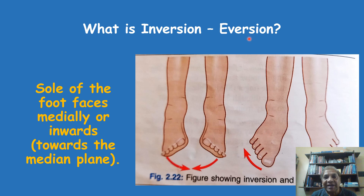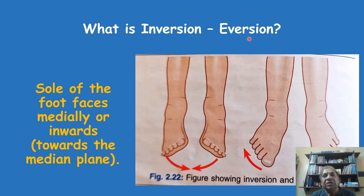Remember that inversion and eversion are movements occurring mainly at the ankle joint. In inversion the sole faces medially, and in eversion the sole faces laterally. By just practicing it in your own foot, you will be able to understand what is inversion and what is eversion.